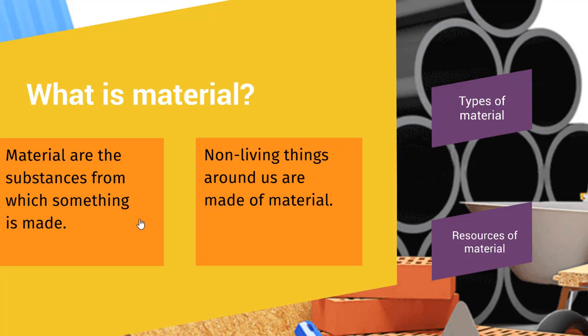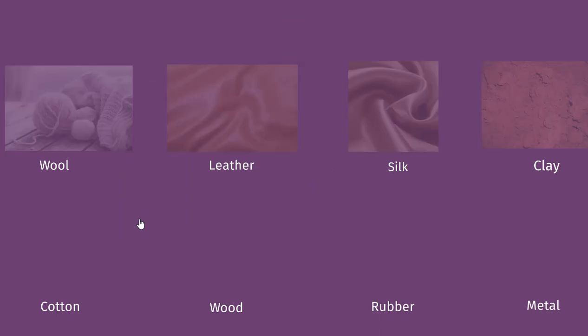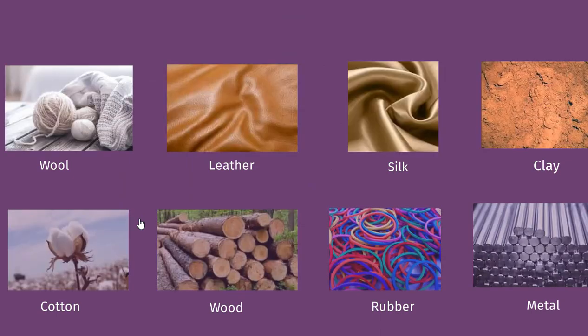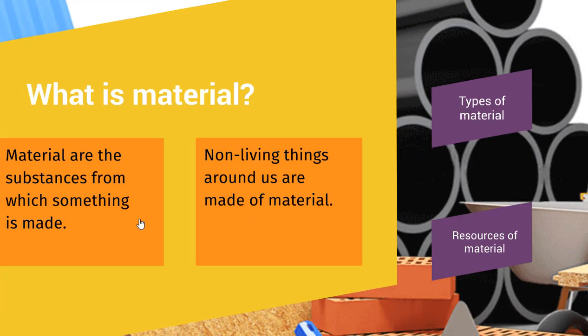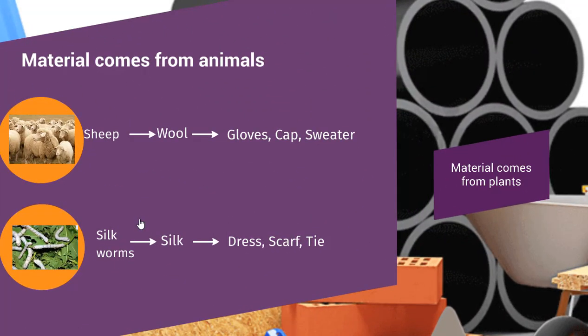Now we will discuss types of material. Wool, leather, silk, clay, cotton, wood, rubber and metal are all types of material. Now we will discuss the sources of material.